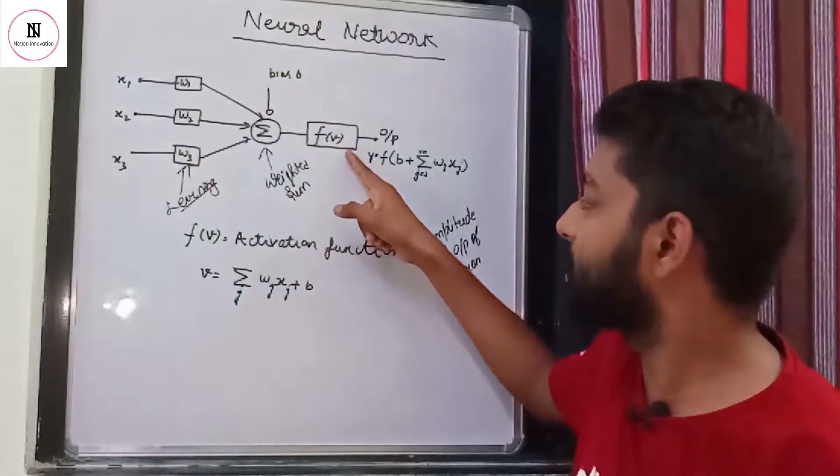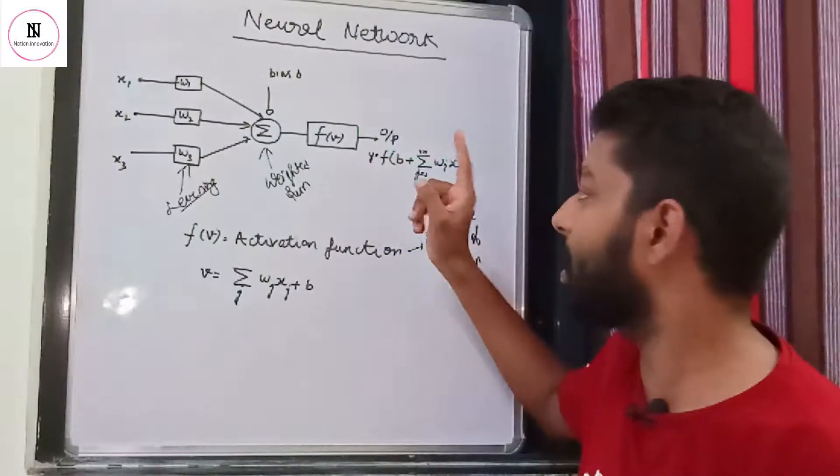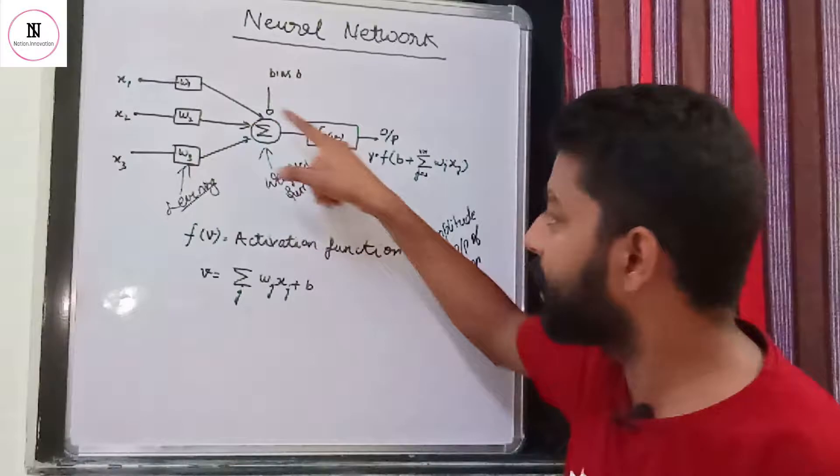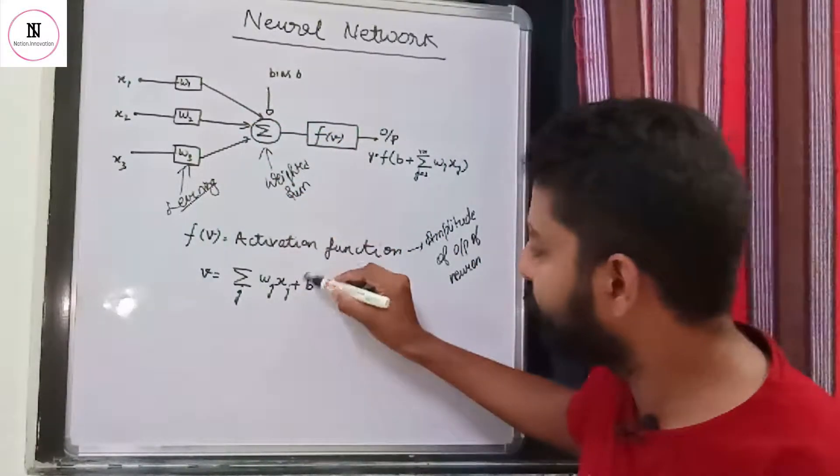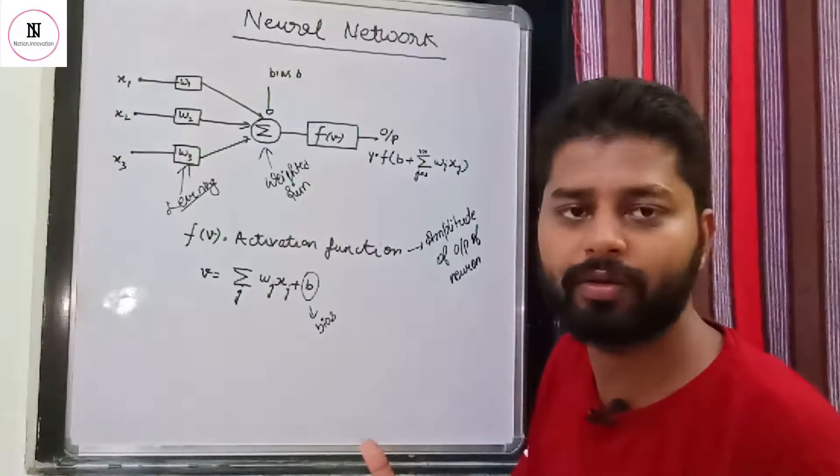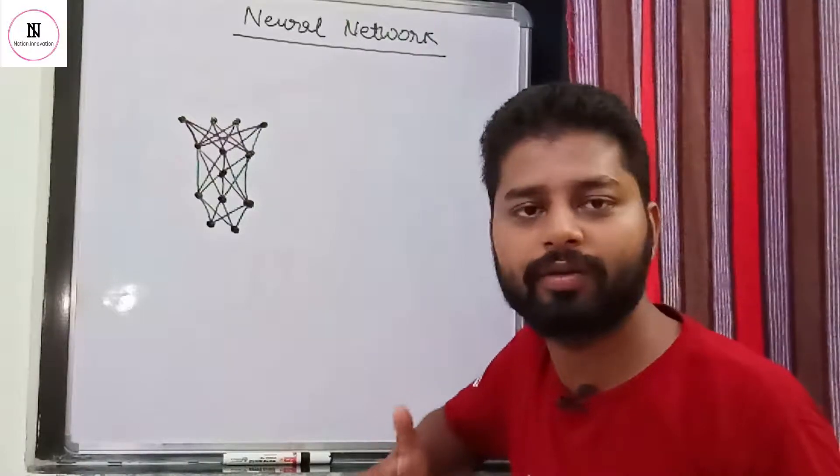f(v) is the activation function. Activation function is used to set a threshold for the output value of the neuron. Now this weighted sum has a bias factor added for the initial value so as to minimize the error. So now as we have learned about the neuron...